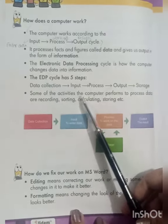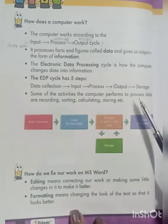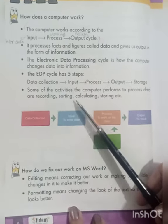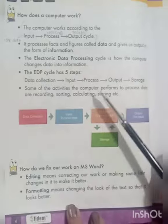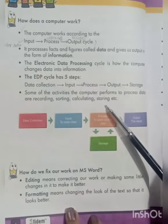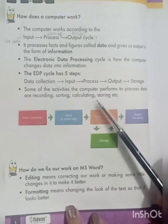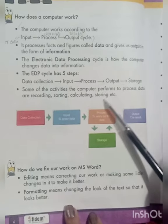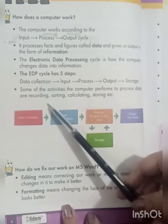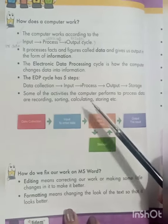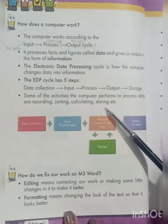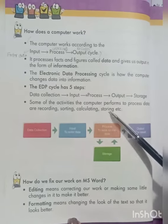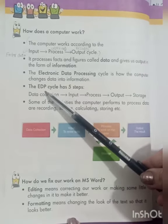Some of the activities the computer performs to process data are recording, sorting, calculating, and storing. These activities are part of Electronic Data Processing — recording, sorting, calculating, and storing. These are all the things that the computer performs in EDP activities.